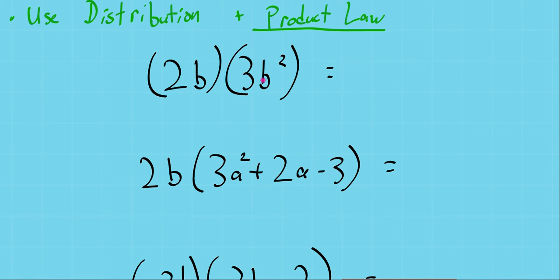So here we have 2b times 3b squared. That's the same as if we wanted to write it out: 2 times 3 times b times two more b's, b times b. So there's b squared, that's these guys, there's b, that's this one, the 3 and the 2. So that's obviously 2 times 3 is 6, and b times b times b is b cubed.